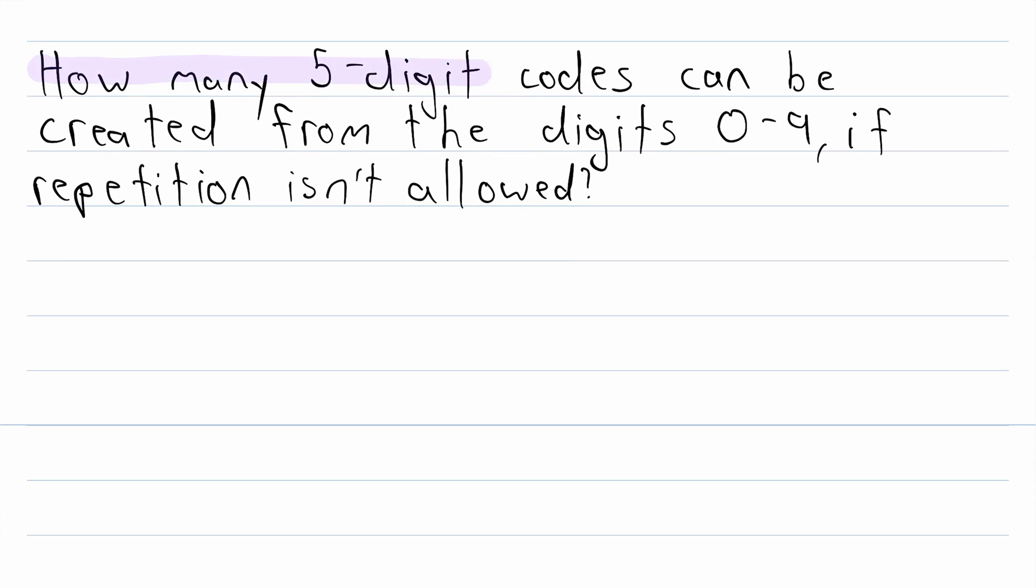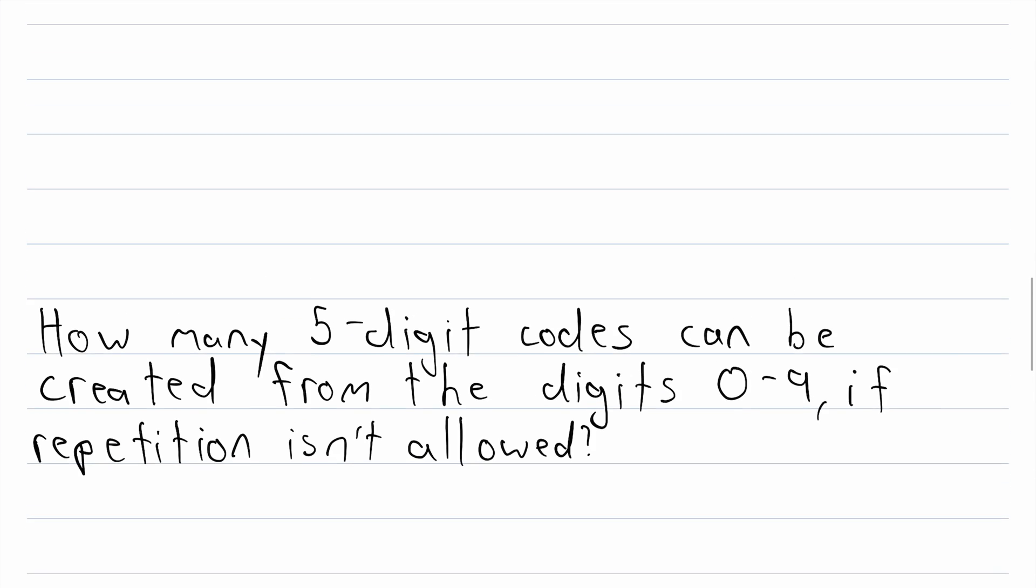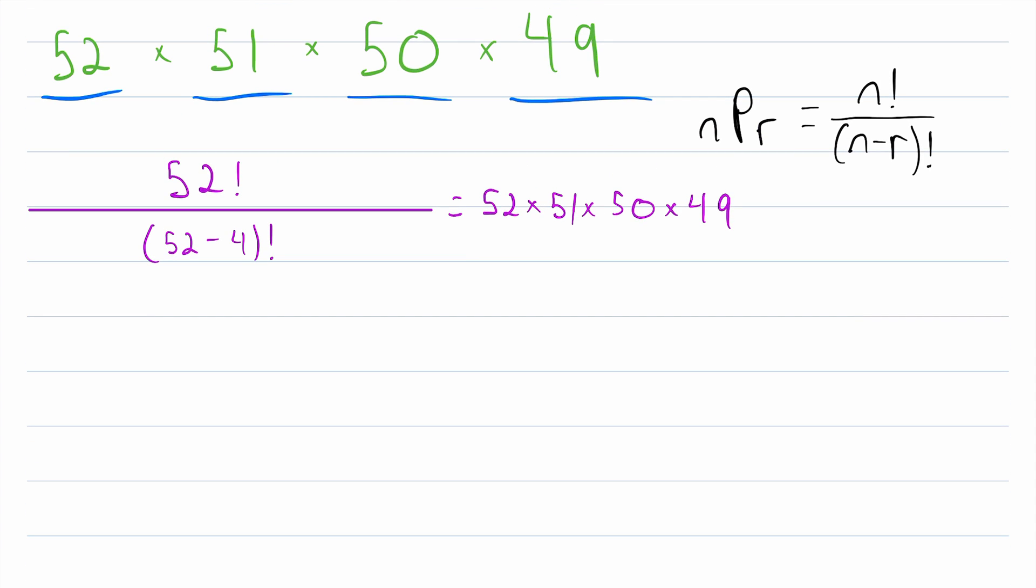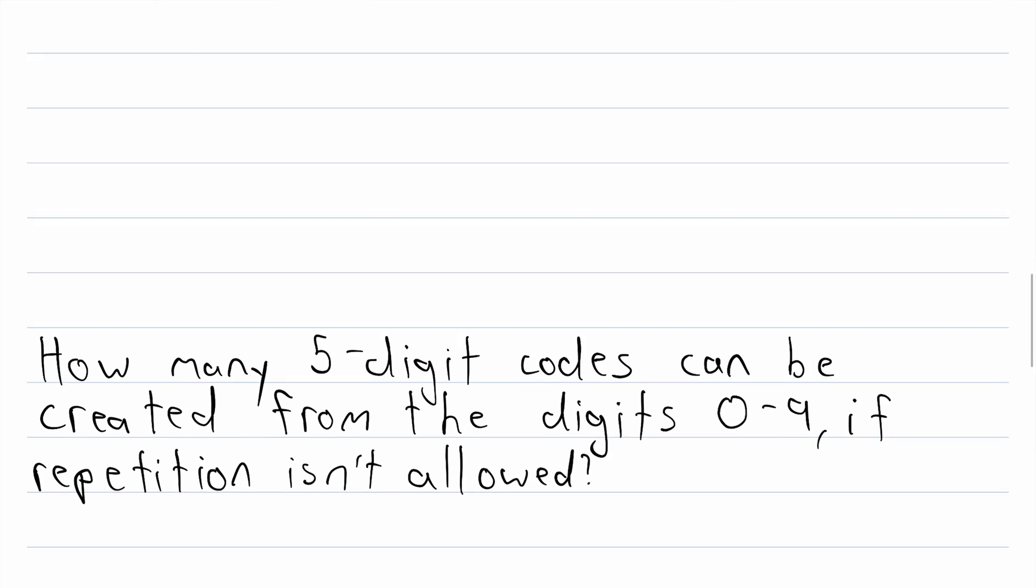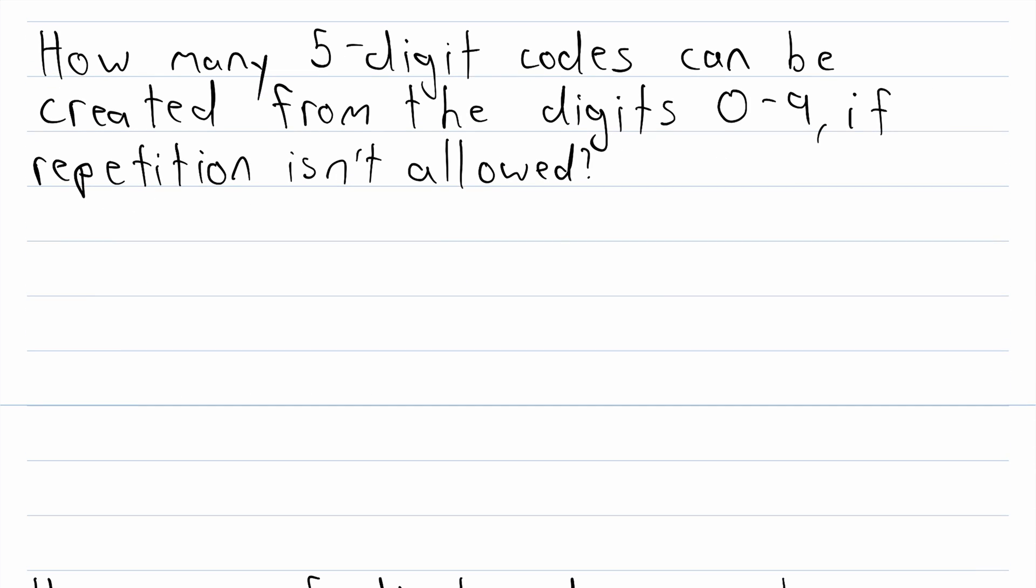How many five-digit codes can be created from the digits 0 through 9 if repetition isn't allowed? So in this example, you're not allowed to reuse digits in the codes. So it works just like the previous examples we have done. In our examples with the deck of cards, we were not allowed to reuse a card. That's why the number of options was decreasing in each position. So try to figure this one out and let me know what you get in the comments.